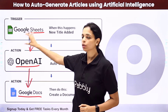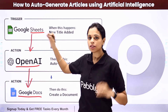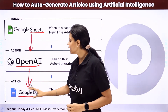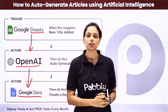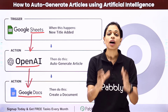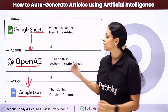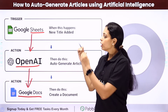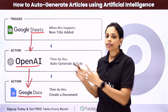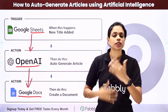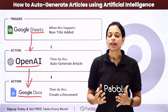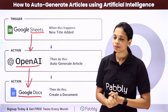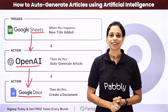Your trigger application would be Google Sheets, and your action applications would be OpenAI and Google Docs. How can you set up this entire thing, integrate the applications, and automate the entire process? To understand that, let me take you to my screen.